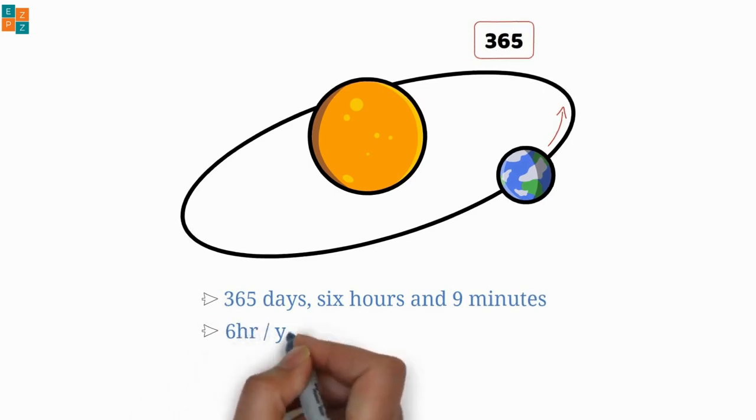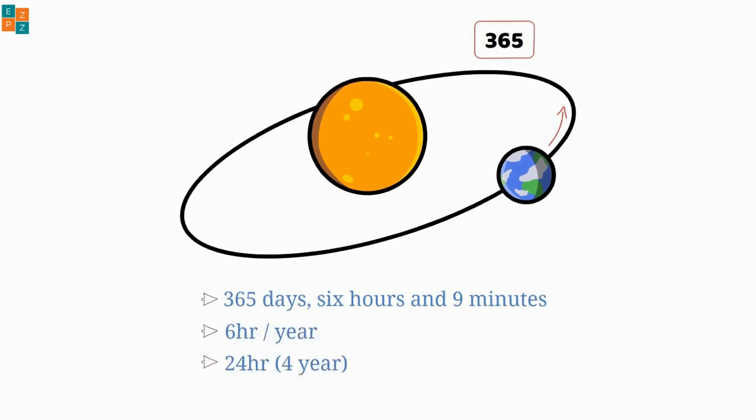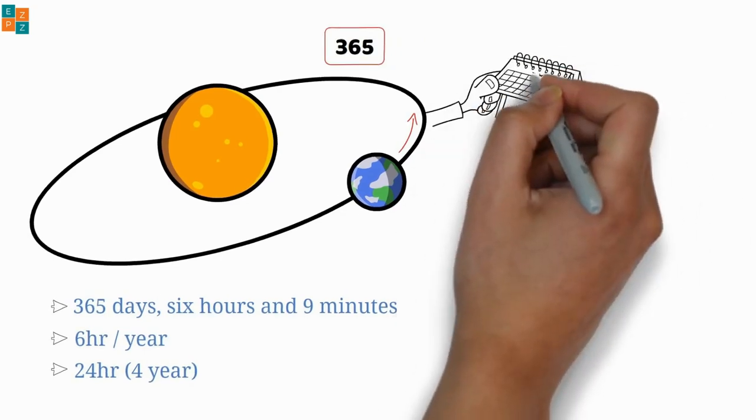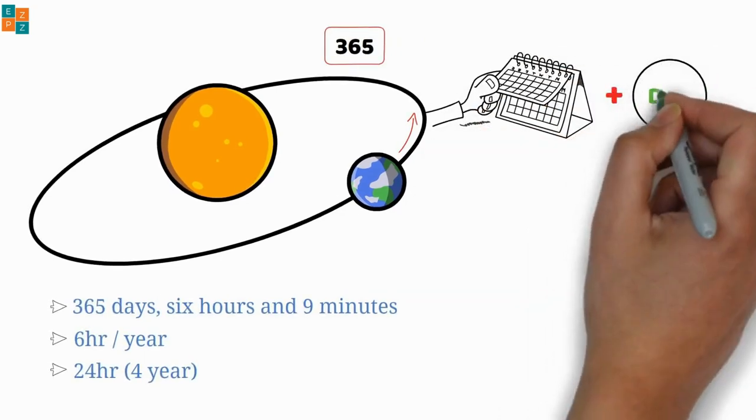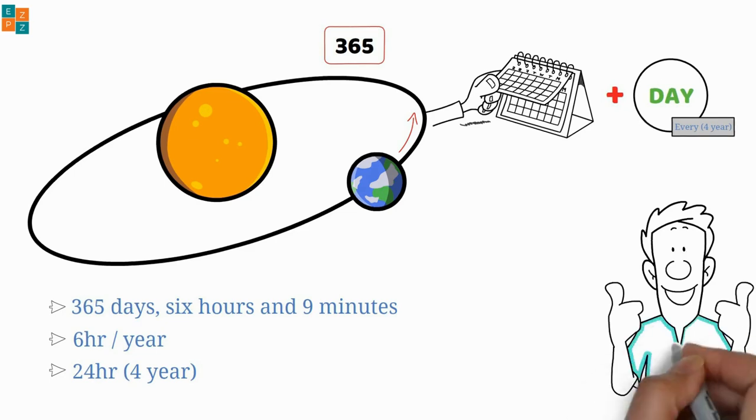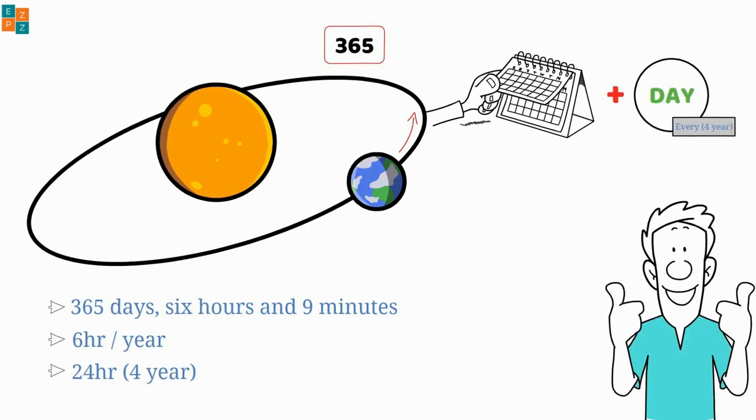That is nearly 6 hours more per year, adding up to 24 hours over the course of 4 years. Therefore, we add an extra day to the calendar every 4 years to make our calendar match up better with the time it actually takes for the Earth to orbit the Sun.